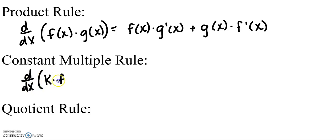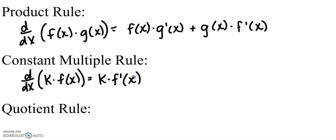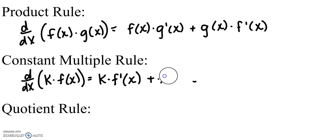The constant multiple rule is actually part of the product rule. If I have k times f(x) — a constant times a function — and I apply the product rule, I get the first times the derivative of the second, plus the second times the derivative of the constant, which is 0. So the second term disappears, and the constant k just hangs out in front while we take the derivative of the function.